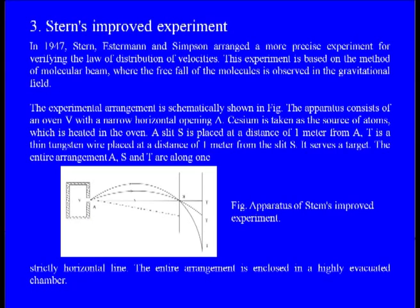We have already discussed two experiments: the first one is Stern's experiment, and the second one is Zartman and Co. For the third experiment, I want to describe Stern's improved experiment. In this experiment, Stern improved his earlier experiment, which is the reason it is known as Stern's improved experiment.